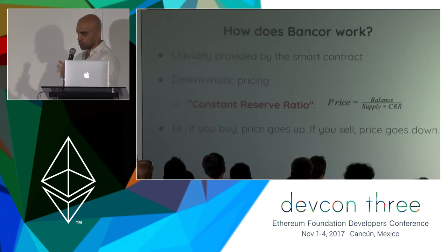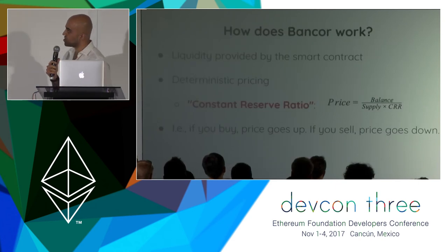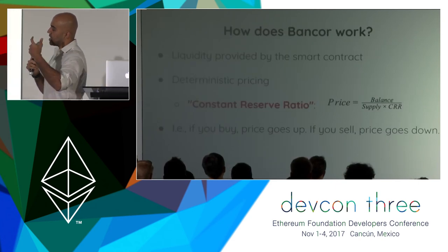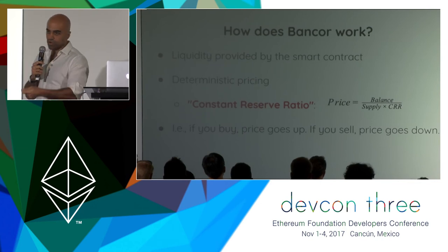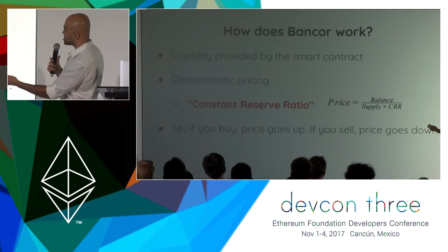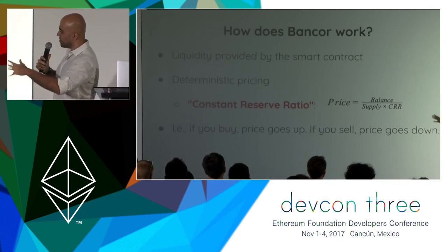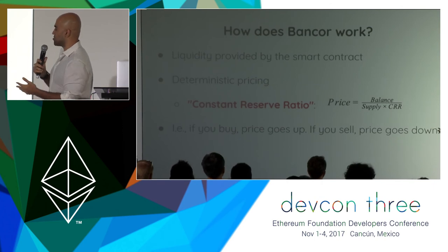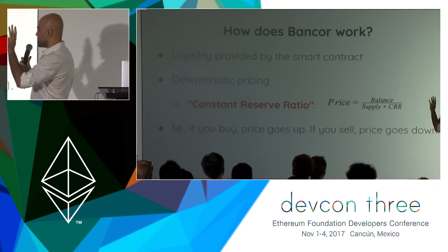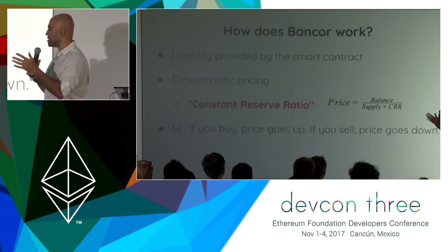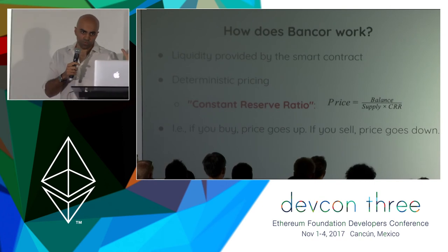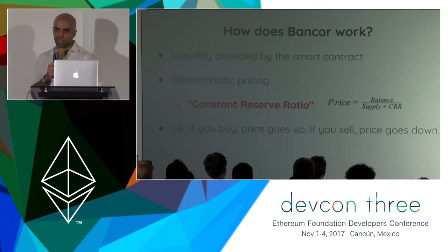How does Bancor work? For those not familiar, Bancor is basically an automated liquidity provider using a smart contract. It gives deterministic pricing by maintaining a constant reserve ratio. Long story short: if you buy, the price goes up; if you sell, the price goes down. That's the law of the land for Bancor. So if I know someone's going to buy, I know the price is going to go up.